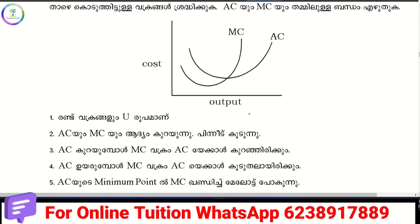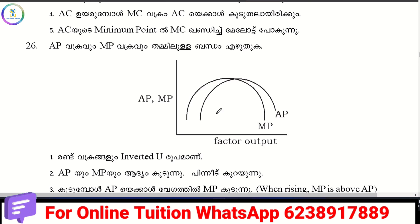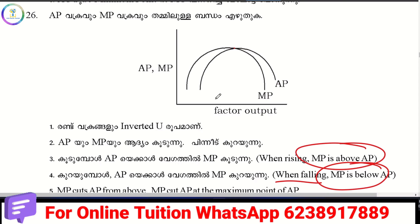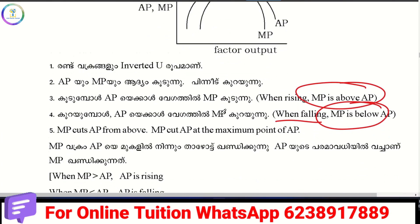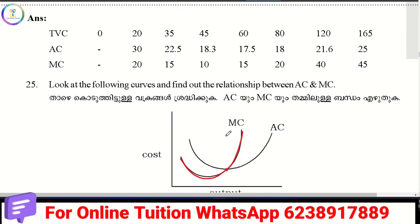If you add AC, then you can add MC to AC at the minimum point — that is the relationship between MC and AC. The relationship between AP and MP: when MP is above AP, AP is rising; when MP is below AP, AP is falling. MP cuts AP at its maximum point. That's it for the short questions and answers in Chapter 3. Thank you.